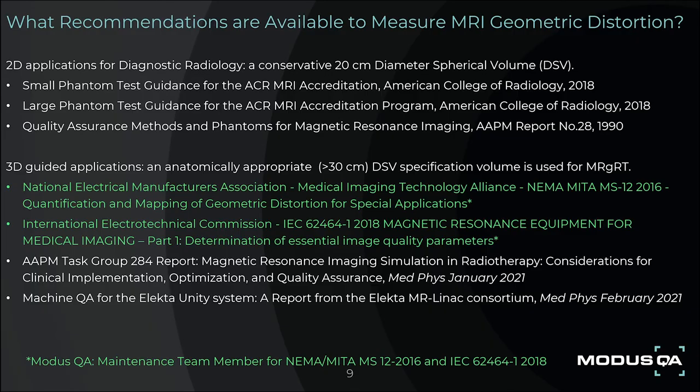Several standards bodies and professional medical and scientific societies have recommendations on methods of measuring image quality parameters, with specific guidelines related to measuring 2D and 3D geometric distortion. Historically, recommendations have been biased towards 2D applications for diagnostic radiology, with testing specifications defined over a conservative 20 cm DSV. National and international standards have been updated to address the growing use of MRI for advanced 3D-guided applications with larger 34 cm DSV specification volumes, appropriate for MR-SIM and MR-Linac QA, with further recommendations released this year by the AAPM Task Group 284 and Elekta MR-Linac Consortium for MR-SIM QA and MR-Linac QA, respectively.